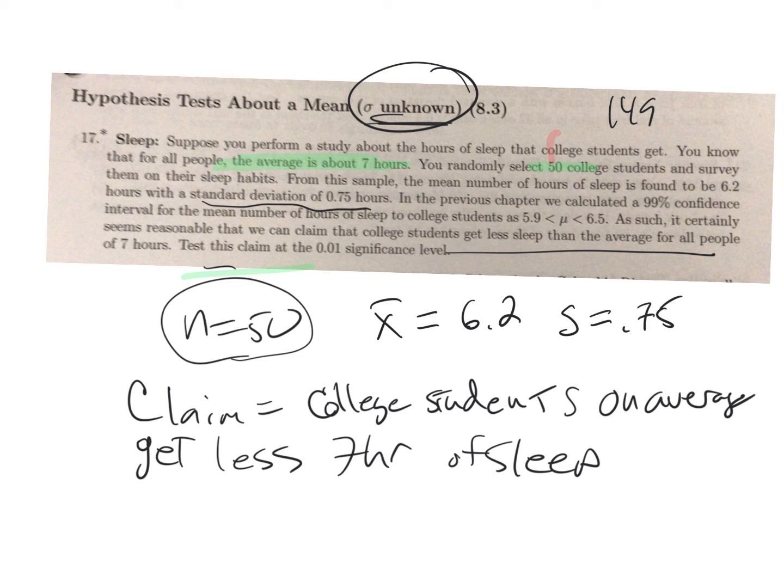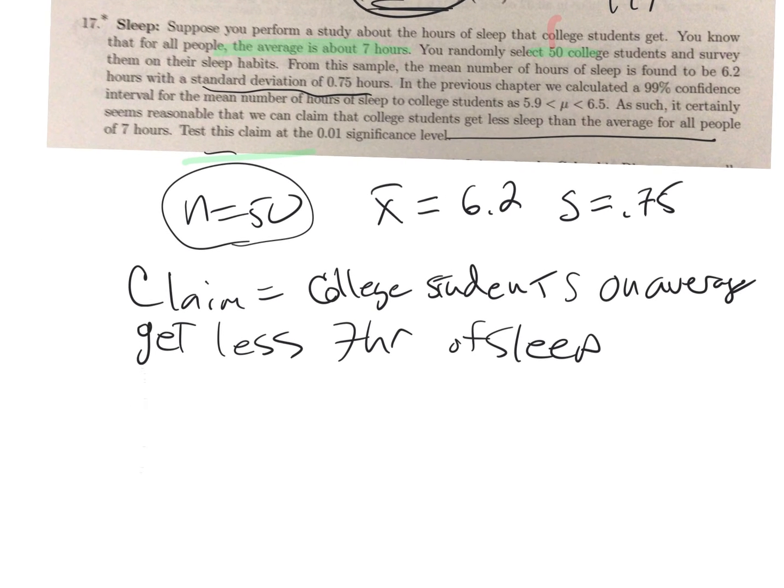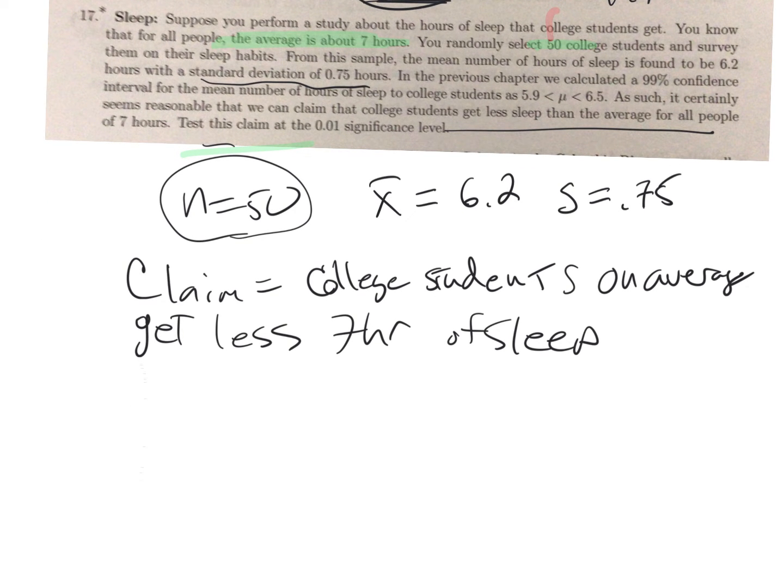So that's the claim. What we want to do is write our two hypotheses. H0 is always the parameter you're working with. We're looking for mu, the population mean, and that's equal to seven. The claim is college students are not getting less sleep on average, they're the same as everybody else.